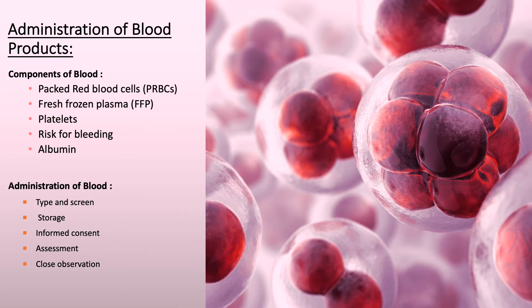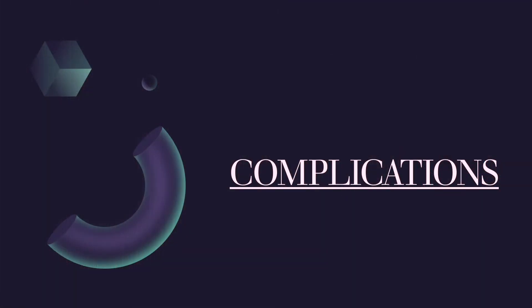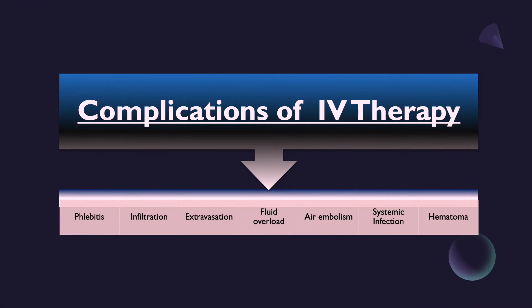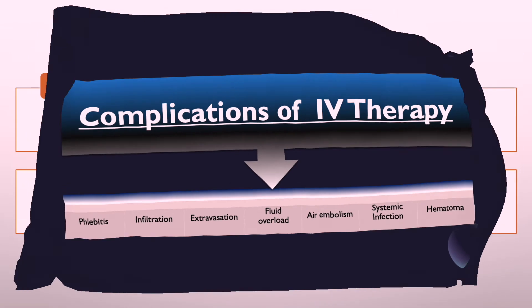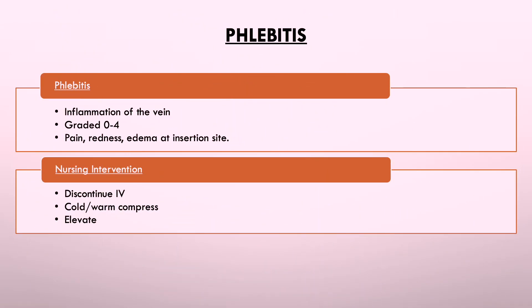Albumin is given to correct complications that crystalloid solutions do not address, providing volume expansion and keeping fluid within the vessel. Moving on to IV complications — appropriate documentation must be charted. Complications include phlebitis, infiltration and extravasation, fluid overload, air embolism, systemic infections, and hematomas. Phlebitis is the most common IV complication — it is inflammation of a vein, which can be caused mechanically by the IV cannula, chemically by medication or a vesicant, or bacterially as septic phlebitis.